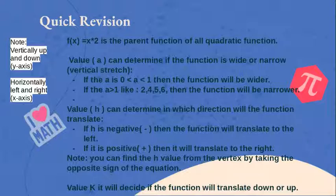If a is between 0 and 1, then the function will be wide. But if a is greater than 1, like 2, 4, 5, 6, then the function will be narrow.